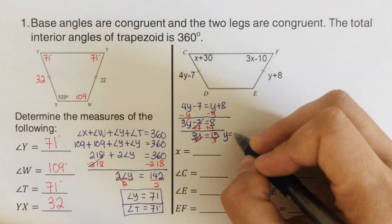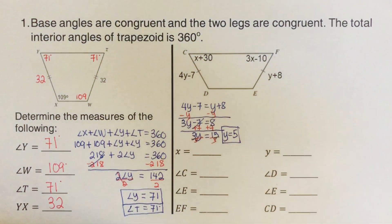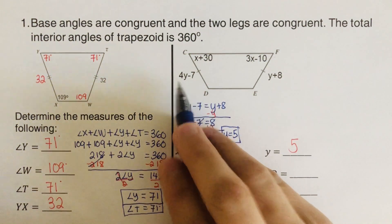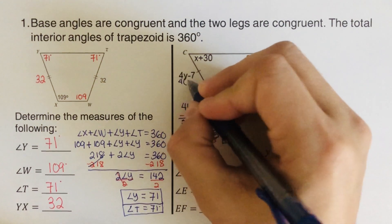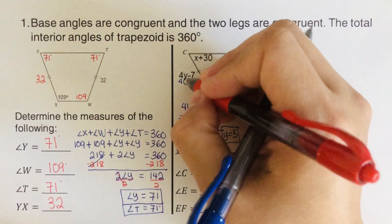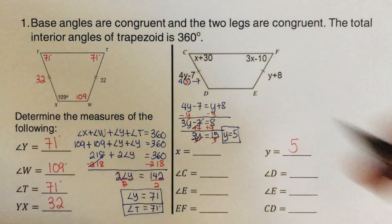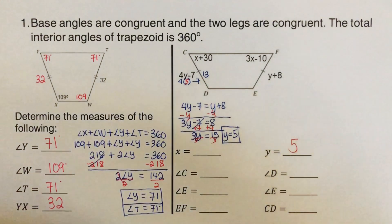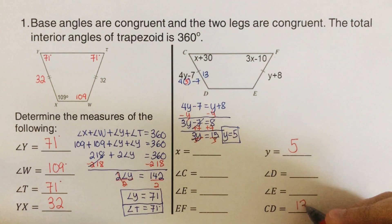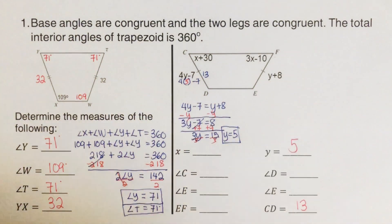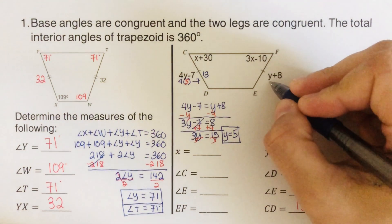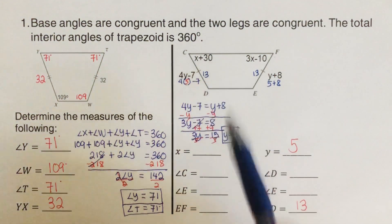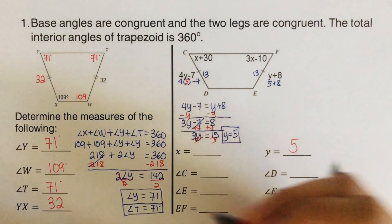With y equals 5, we plug it in: 4 times 5 minus 7 is 20 minus 7, which is 13. So CD equals 13. Plugging y into the other expression: 5 plus 8 is also 13, so EF equals 13 as well. That confirms the two legs are congruent.